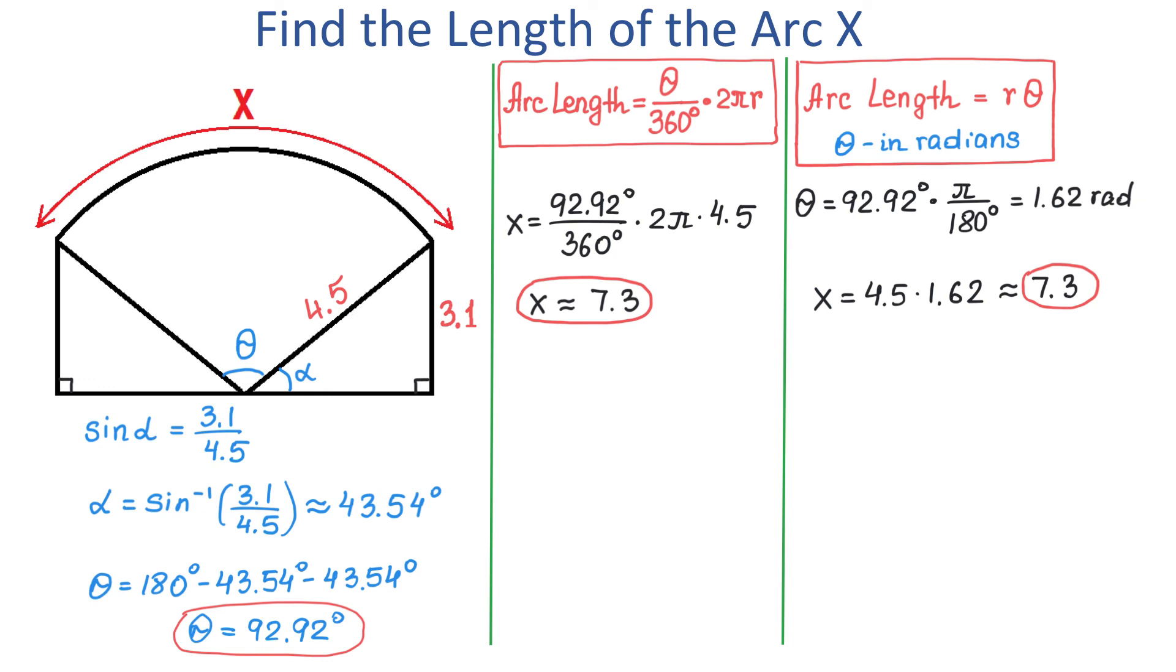Now, do you see the similarities between these two formulas? In both methods, we use angle theta, which is 92.92 degrees. Then 2 pi over 360 degrees is the same as pi over 180. And in both cases, we multiply by the radius of 4.5.